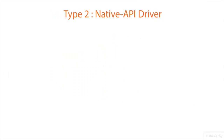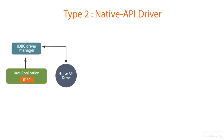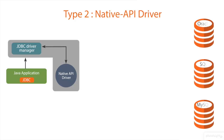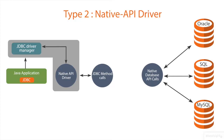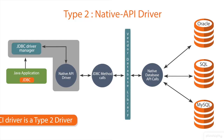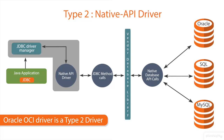Now let us understand the Type 2 driver, that is, the native API driver. Whenever a Java application uses a Type 2 native API driver for interacting with the database, the native API driver converts the JDBC method calls into native API calls of the database using the client-side libraries of the database. For example, the Oracle OCI driver is a Type 2 driver.